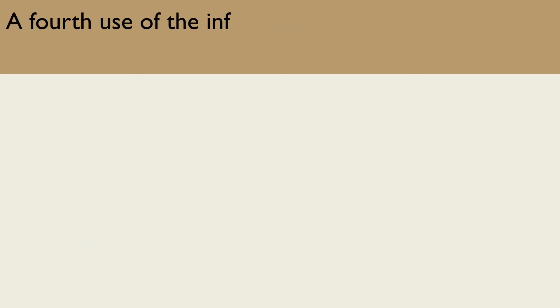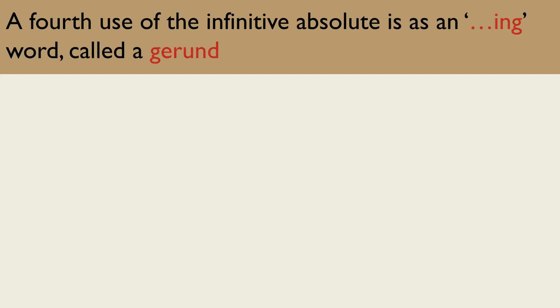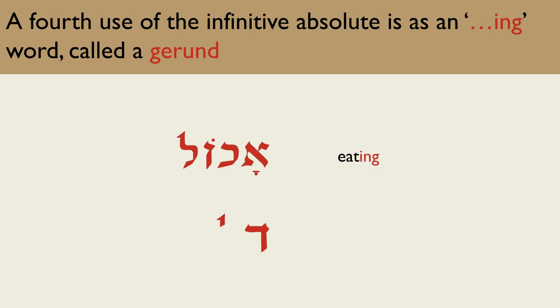A fourth use of the infinitive absolute is as an 'ing' word, called a gerund. The infinitive absolute ochol can mean 'eating,' and holoch, 'going.'